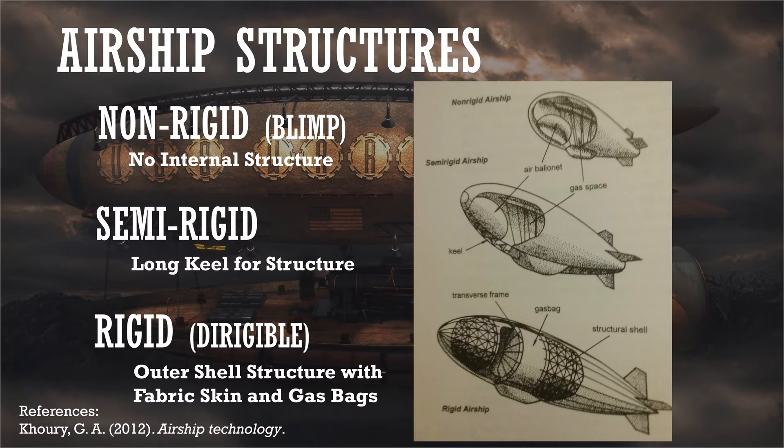A rigid airship actually has an outer shell structure with some skin on it, and it will have separate gas bags inside this structure. The name dirigible has sort of taken over the meaning of a rigid airship. The word dirigible comes from a French word meaning to steer. So really, any airship should be a dirigible. However, it has effectively been narrowed down to only include rigid airships.